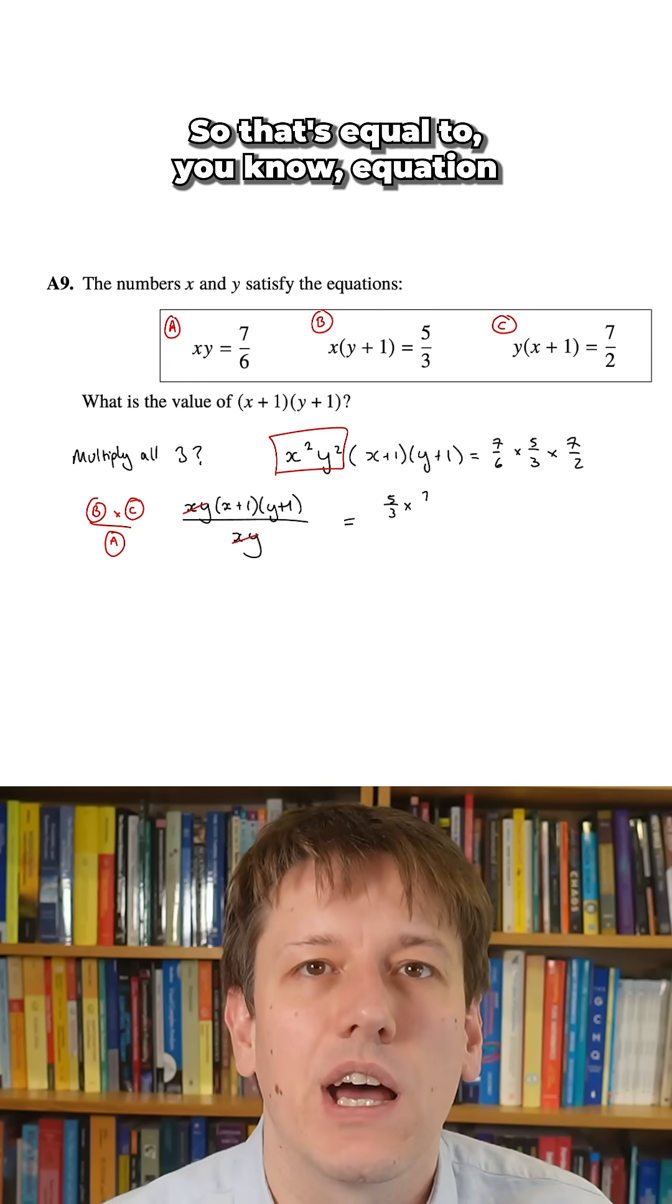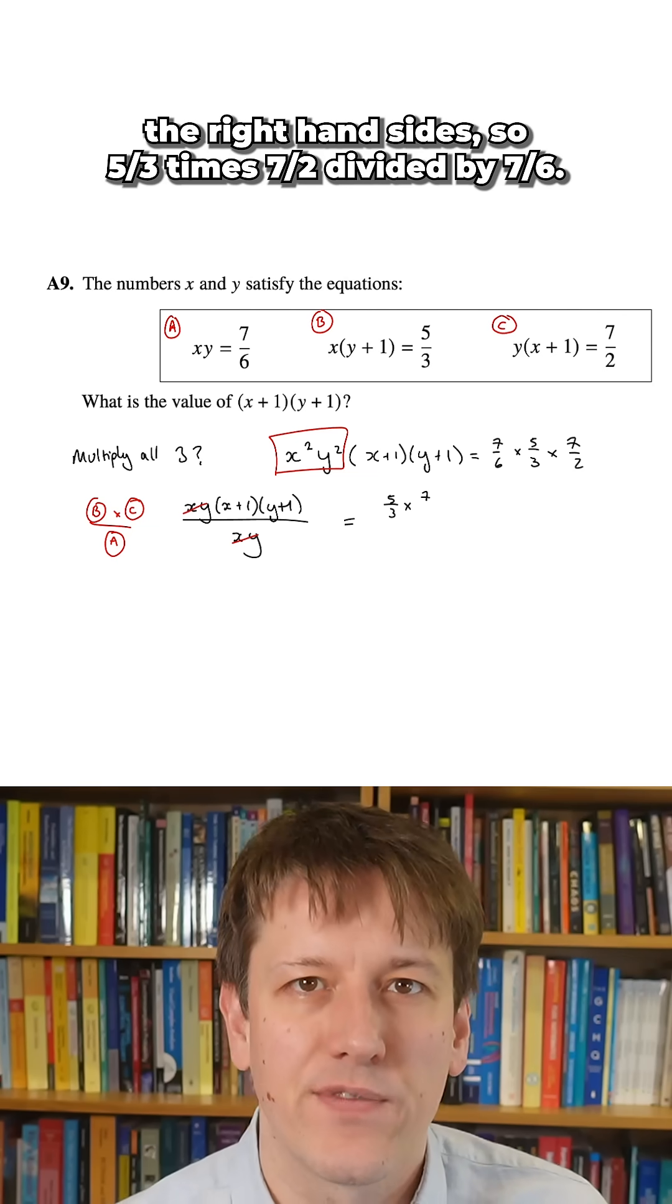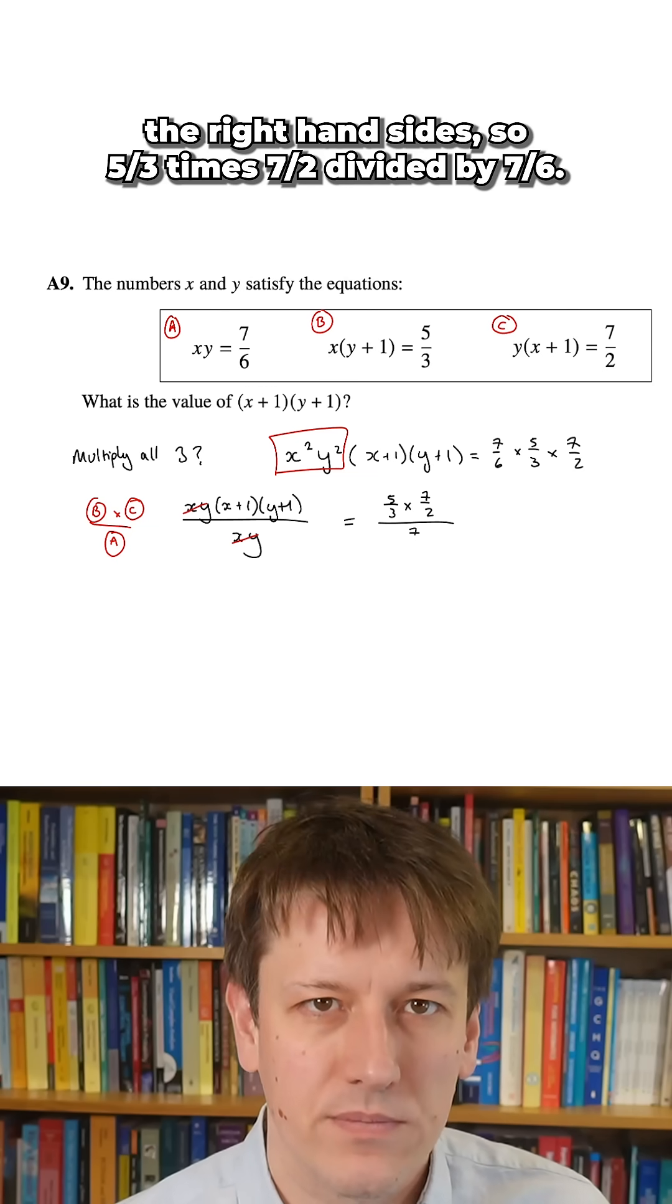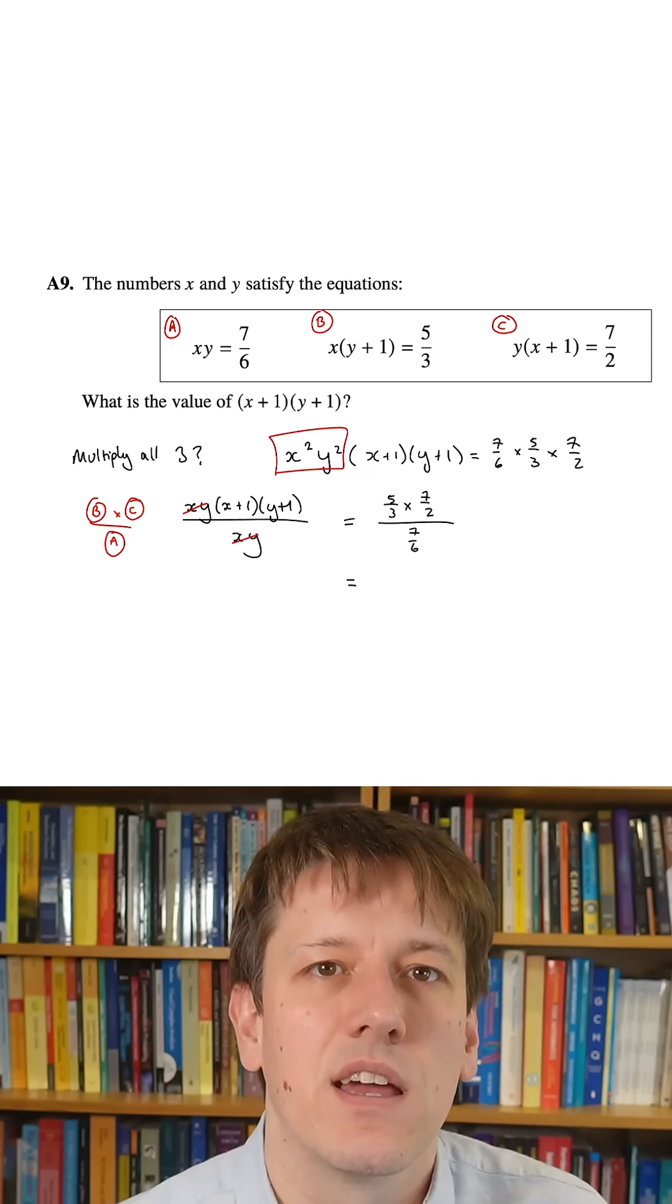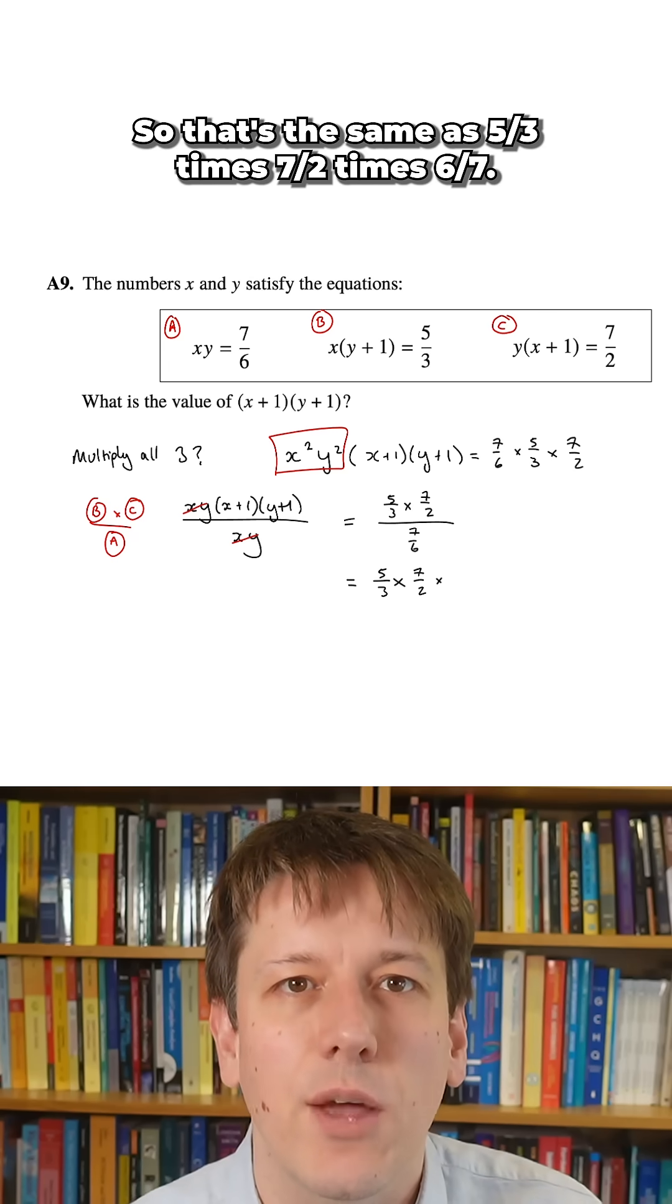Dividing by a fraction, we turn it upside down and multiply, so that's the same as 5/3 times 7/2 times 6/7.